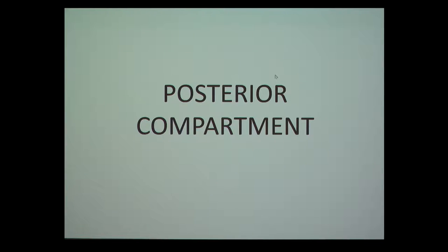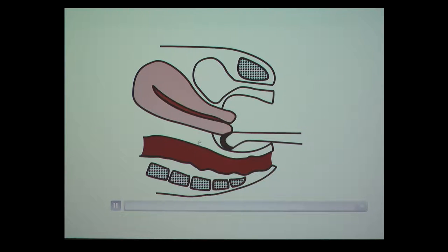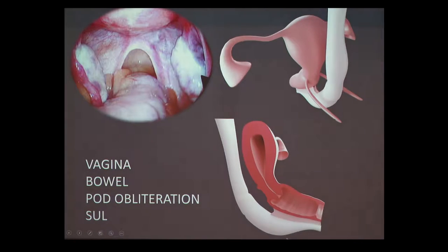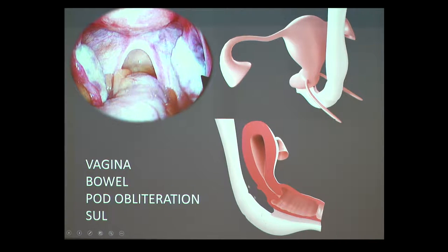The posterior compartment — the pouch of Douglas — is much more common. When you put the probe in the posterior fornix, you can see the pouch of Douglas properly. First you'll see the vaginal wall right in front of your probe, so you can look for a nodule in the vaginal wall. You can also push on the uterus to see whether it slides over the bowel, because pouch of Douglas obliteration means something is stuck to the back of the uterus so the surgeon cannot access the pouch with laparoscopy. You need that dynamic assessment by pushing on the uterus.